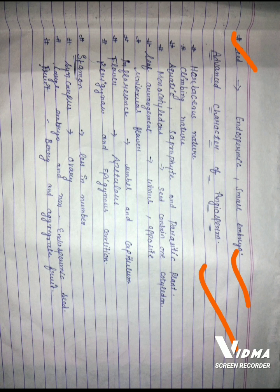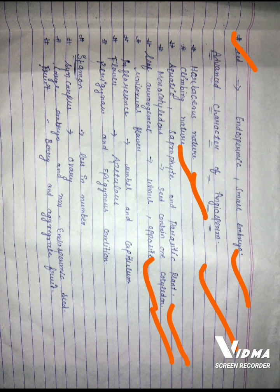Advanced characteristics include: herbaceous nature, climbing nature, aquatic and saprophytic, and parasitic plants. Monocotyledons — seeds contain one cotyledon. Leaf arrangement is opposite.